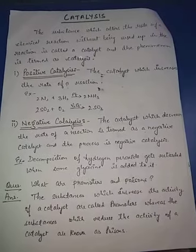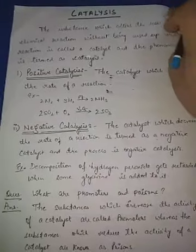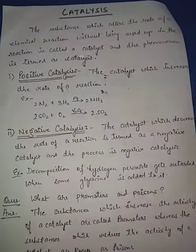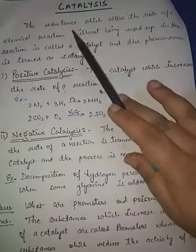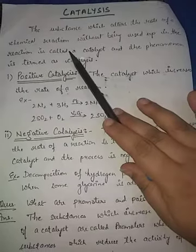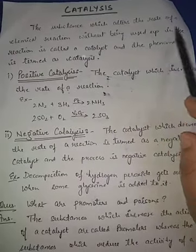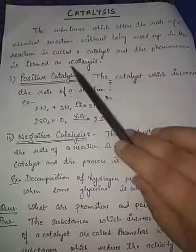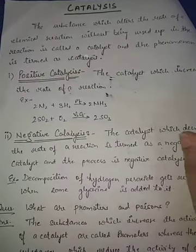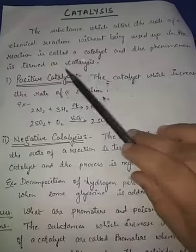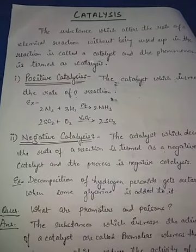Hello students, today we will study about catalysis and catalysts. We all know that catalysts are used to speed up chemical reactions, but here we will also study about negative catalysis. A substance which alters the rate of a chemical reaction without being used up in the reaction is called a catalyst. When the reaction is over, the catalyst is obtained in its original state, and this phenomenon is termed catalysis.